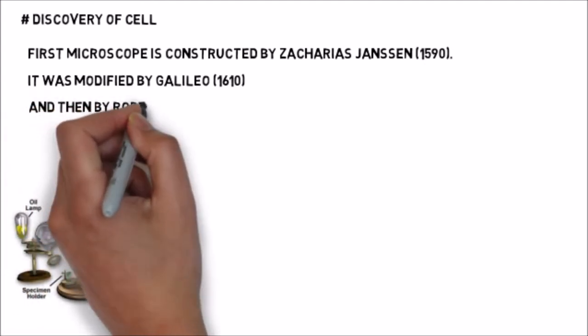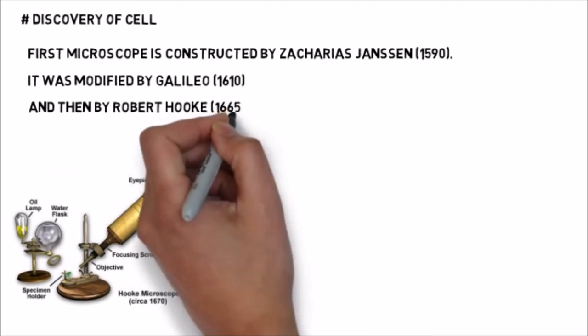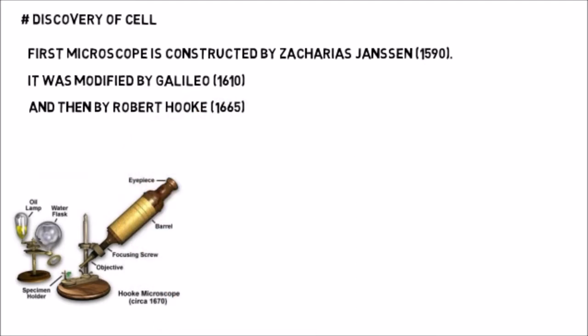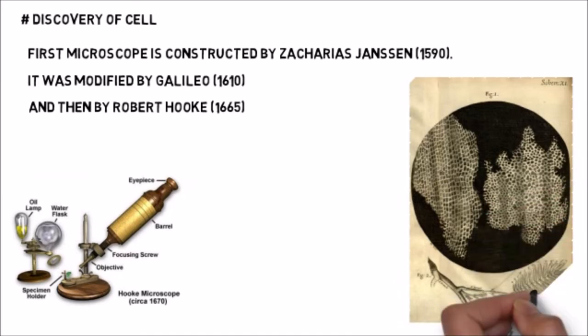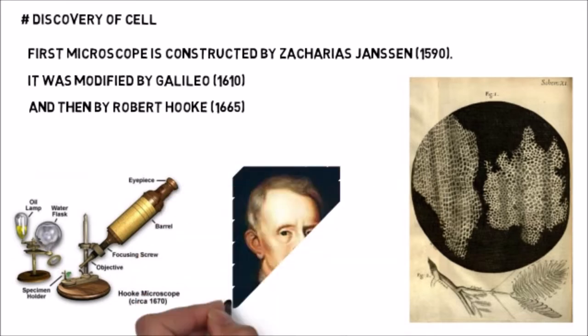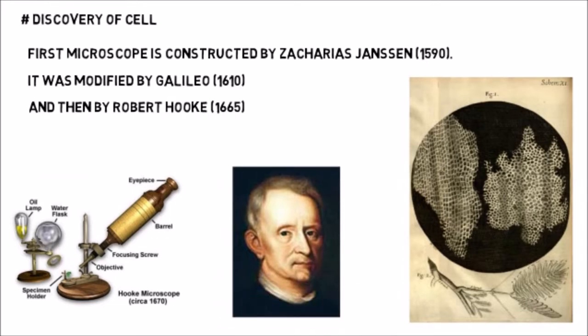Robert Hooke modified and used the microscope in 1665. He observed the cork under the microscope. The bark of a tree is generally called cork. He studied cork samples under the microscope and observed a large number of compartments joined with each other, forming a honeycomb-like structure. He named these compartments 'cell'. So cell was first discovered by Robert Hooke in 1665 while observing cork structure.